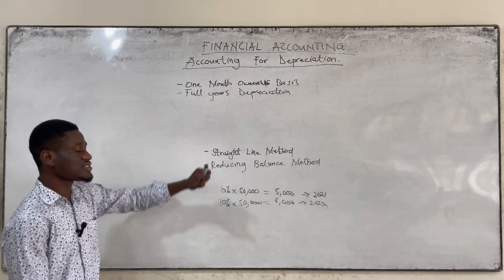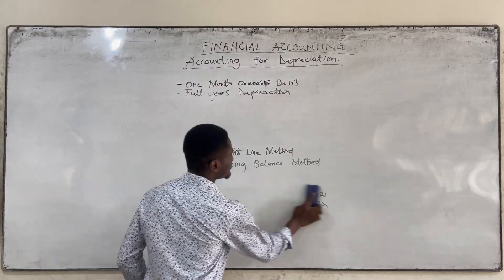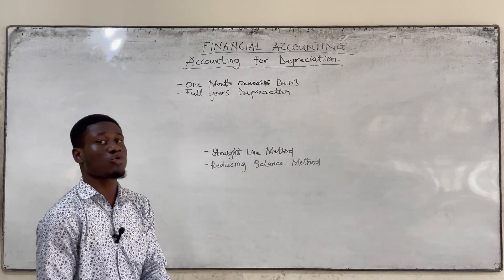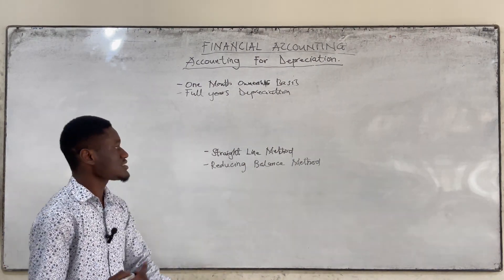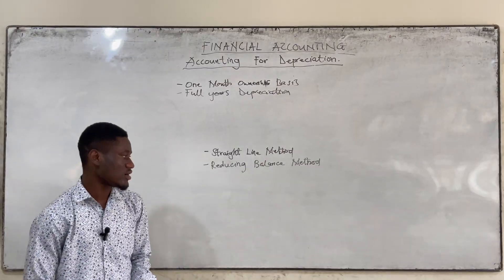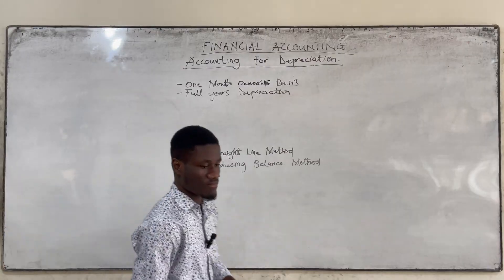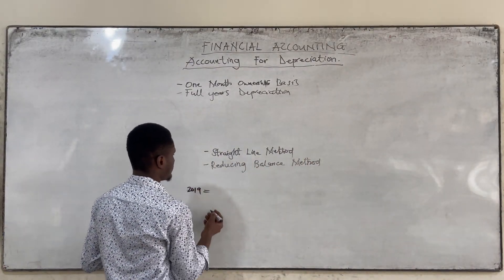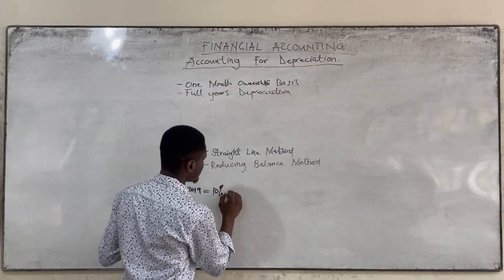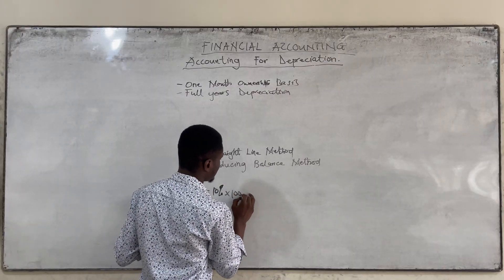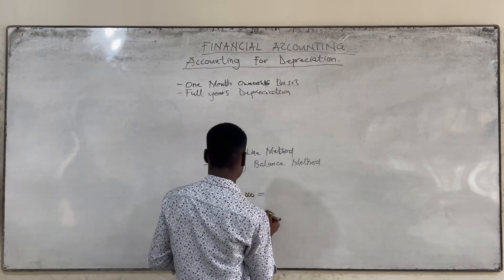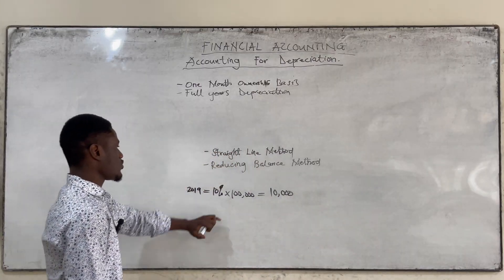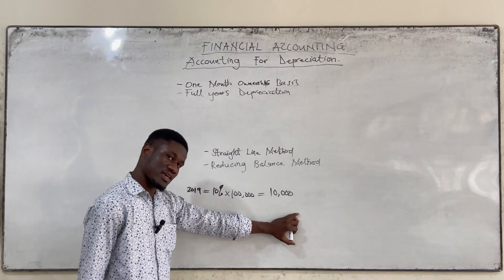With the reducing balance method, we are going to calculate on cost for the first year. The subsequent years, we are going to calculate on the net book value. So let's say in 2019 the rate was 10% and the cost was 100,000, giving us 10,000 depreciation. For the first year, we calculated on the cost of the asset.